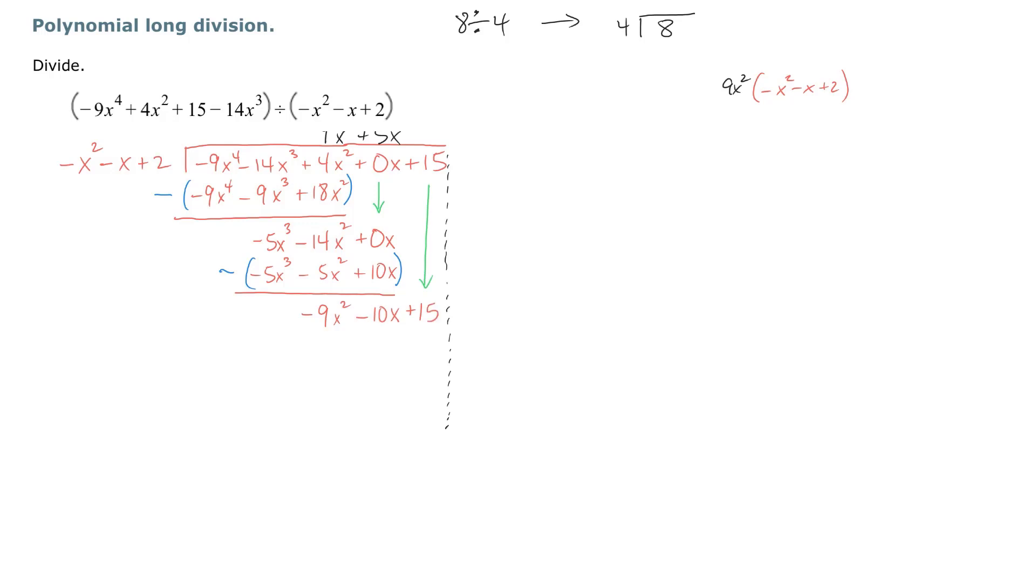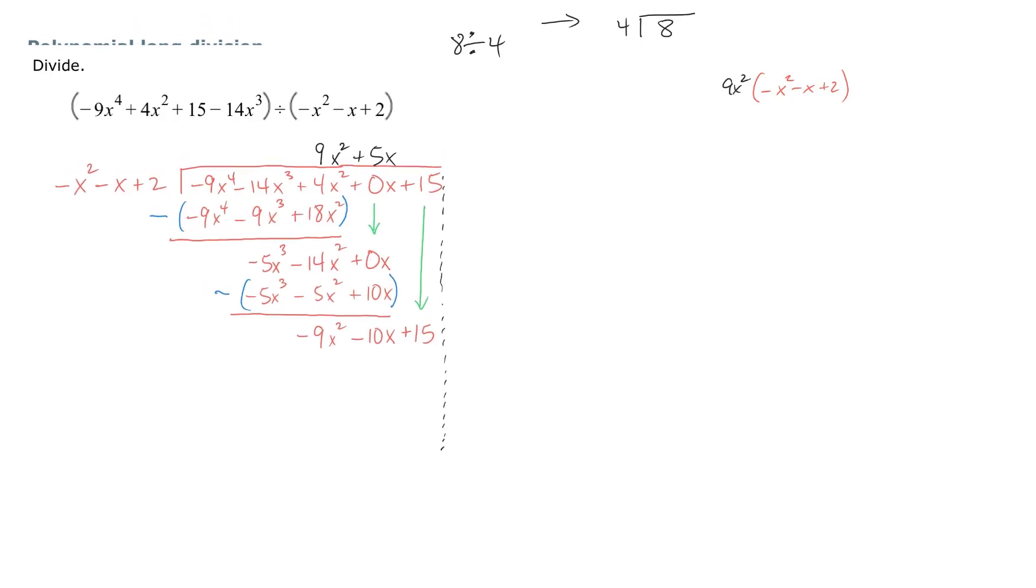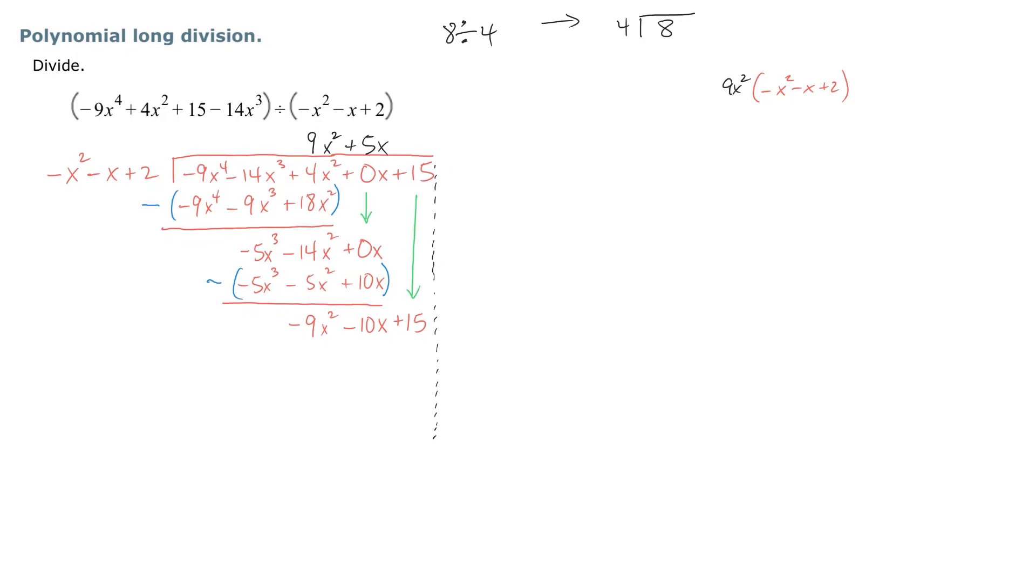We're at the question again, about how many times does negative x squared minus x plus 2 go into negative 9x squared. And the answer is plus 9. Plus 9.